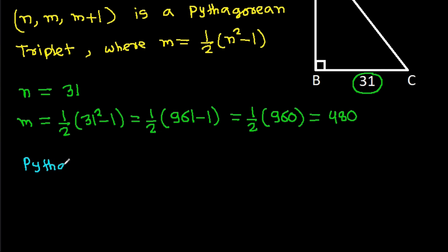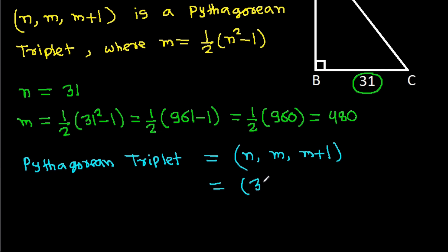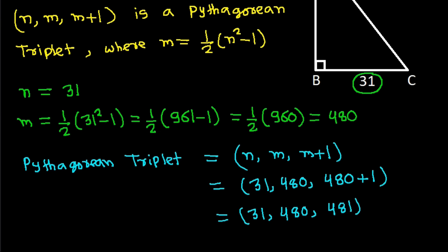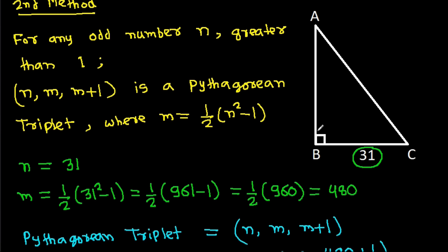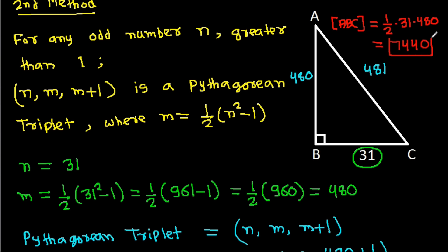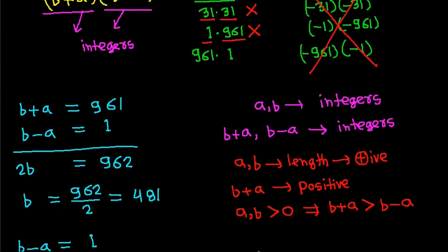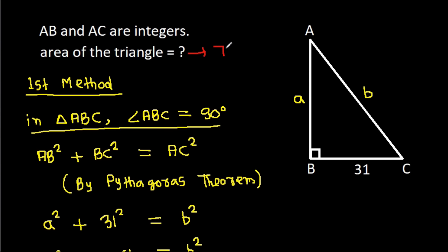So the Pythagorean triplet is n, m, m plus 1, which gives 31, 480, and 481. The height is 480 and the hypotenuse is 481. Therefore the area of triangle ABC is one half times 31 times 480, which equals 7440.